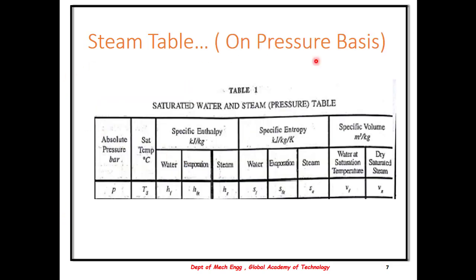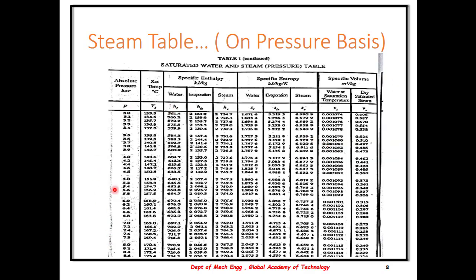A typical steam table on a pressure basis would look something like this. It will have values of pressure in bar, the saturation temperature, specific enthalpy H for water, evaporation and steam — that is HF, HFG, and HG — and similarly the entropy values SF, SFG, SG, and the specific volume in terms of meters cubed per kg. For each pressure, the individual values are given.